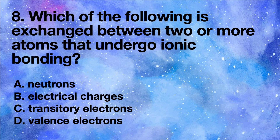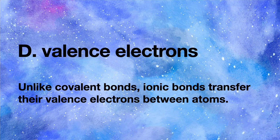Which of the following is exchanged between two or more atoms that undergo ionic bonding? A neutrons, B electrical charges, C transitory electrons, D valence electrons. Answer: D valence electrons. Unlike covalent bonds, ionic bonds transfer their valence electrons between atoms.